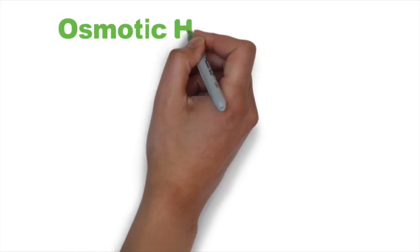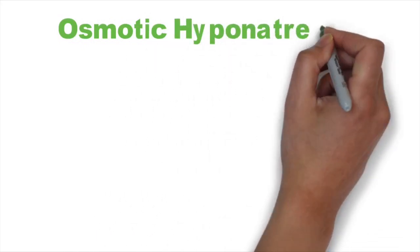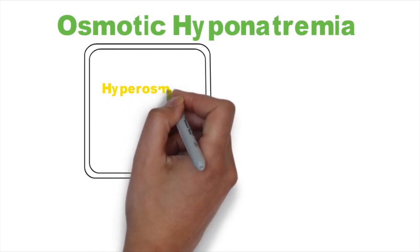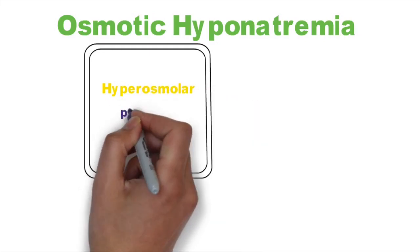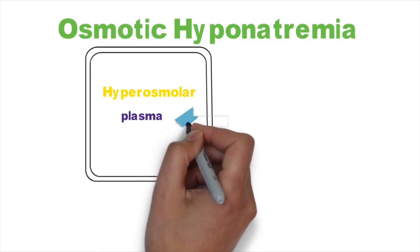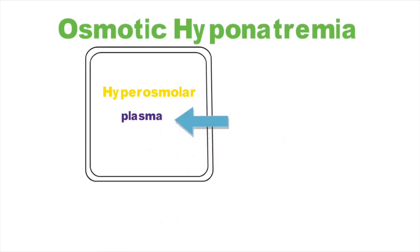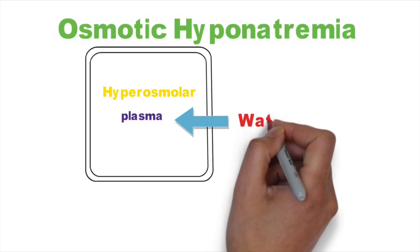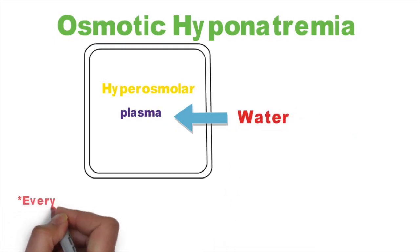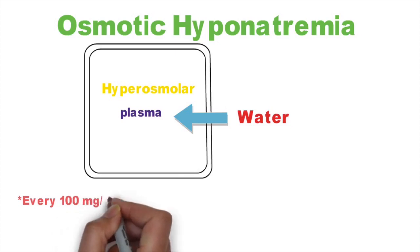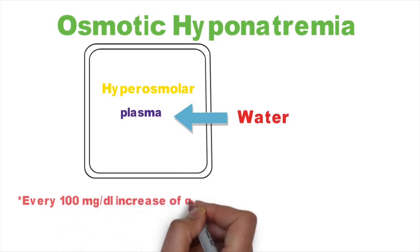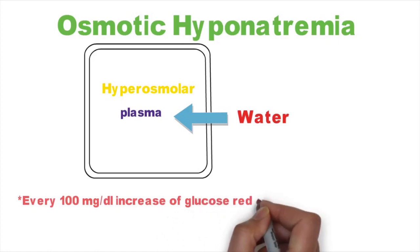Another type is osmotic hyponatremia. When an osmotic substance like glucose, mannitol, sorbitol, or glycerol is increased in plasma, it causes an increase in plasma osmolarity. When plasma osmolarity is increased, there will be an osmotic shift of water into plasma, so that sodium concentration decreases. To treat osmotic hyponatremia, we have to treat the underlying cause.